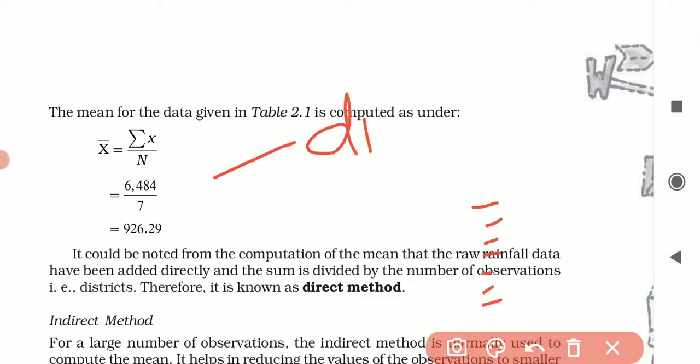This is the direct method for ungrouped data. Now, you have used this and here we have written sigma x. How much is the addition? 6484. And we divide this by 7. What we have got? 926.29.